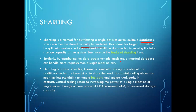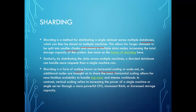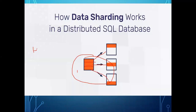By distributing data across multiple machines, a sharded database can handle more requests than a single machine. Sharding is a form of scaling known as horizontal scaling or scale-out — as additional nodes are brought on, they load data to handle big data and intense workloads. In contrast, vertical scaling refers to increasing the power of a single machine through a more powerful CPU, increased RAM, and increased storage.